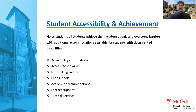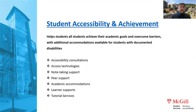Student Accessibility and Achievement helps all students achieve their academic goals and overcome barriers. They provide additional accommodations for students with documented disabilities, but every student can access their services. These include tutorial services (a peer tutor network), access technologies, note-taking support, peer support, various academic accommodations, learner supports, and webinars on improving study habits, time management, and setting up an effective workspace. Even temporary impairments — like a broken arm — can receive support.